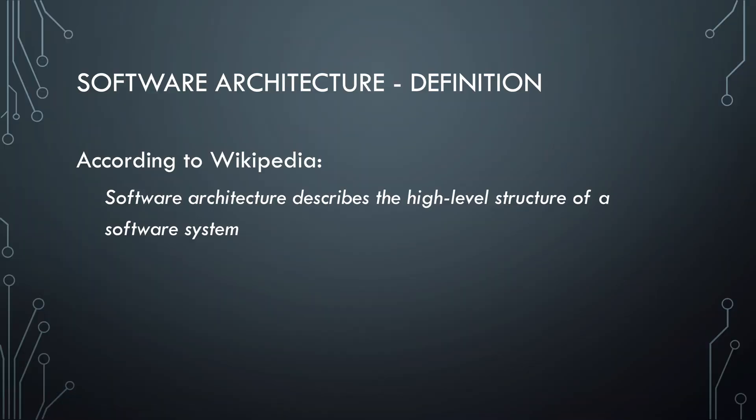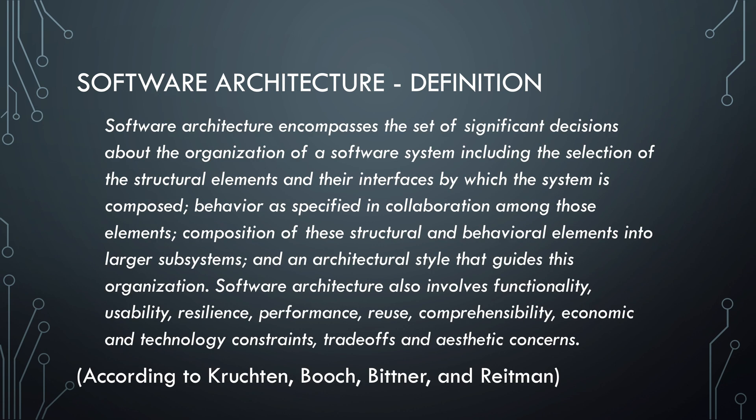Before we dive in, I want to take a step back and talk a bit about software architecture. Wikipedia describes it as the high-level structure of a software system. A more extensive definition is given by Philip Cruchton, Grady Booch, Kurt Bittner and Rich Reitman. They view it as a set of important decisions about the organization of a software system, which includes the concepts that the system is composed of, their behavior and how they are related.